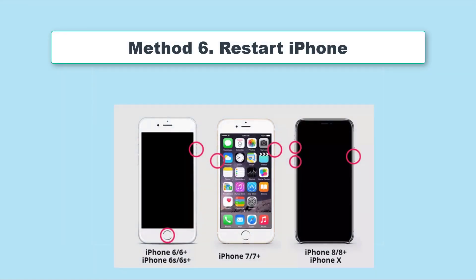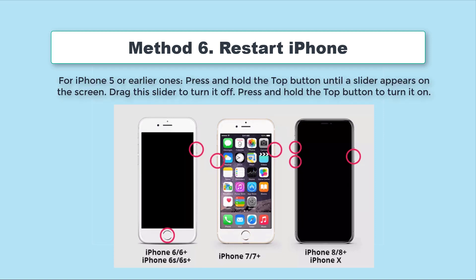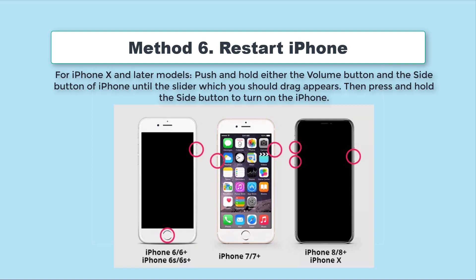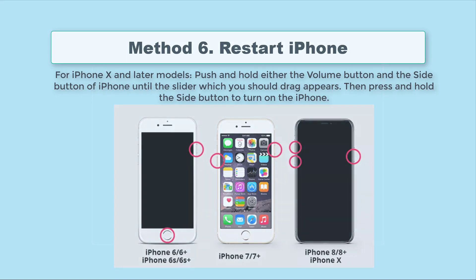Restarting iPhone is easy and effective for the iPhone unable to share problem. Note that different operations are needed for different models. For iPhone 5 or earlier, press and hold the top button until a slider appears on the screen, then drag the slider to turn it off, and press and hold the top button to turn it on. For iPhone 6/7/8, press and hold the side button, swipe the power icon, then hold the side button to turn it on. For iPhone X and later models, push and hold either the volume button and the side button until the slider appears, then press and hold the side button to turn on the iPhone.